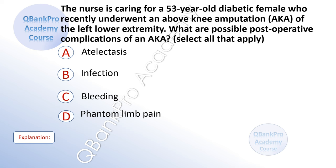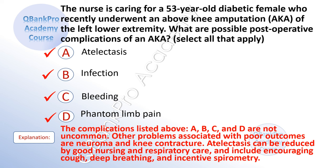The nurse is caring for a 53-year-old diabetic female who recently underwent an above-knee amputation (AKA) of the left lower extremity. What are possible post-operative complications of an AKA? Select all that apply. A. Atelectasis. B. Infection. C. Bleeding. D. Phantom limb pain. The correct answers are A, B, C, and D — all of the above are not uncommon. Other problems associated with poor outcomes are neuroma and knee contracture. Atelectasis can be reduced by good nursing and respiratory care, including encouraging cough, deep breathing, and incentive spirometry.